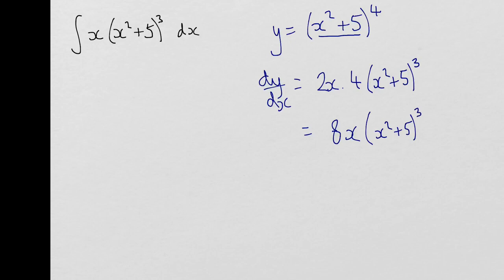Lovely. So let's see which bits match up. The (x² + 5)³ matches up, and that x in front of it also matches up. So when I'm reversing differentiation, I know that for this function, before it got differentiated, it would have been this.